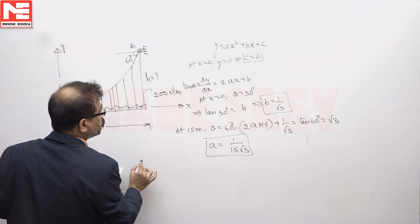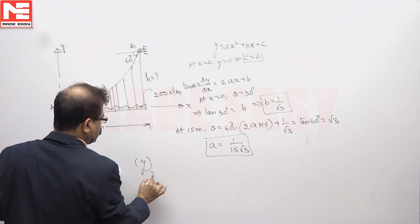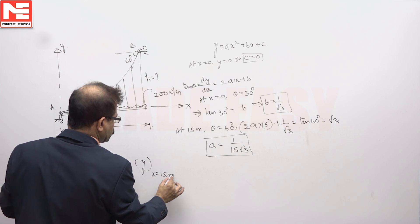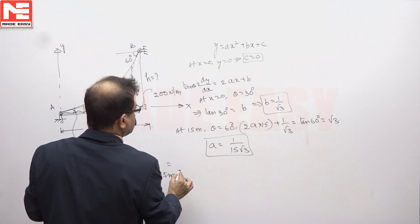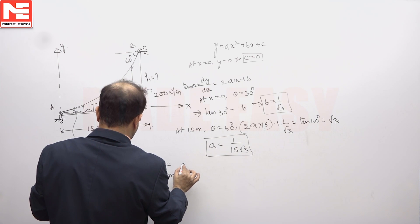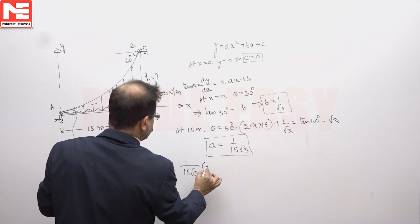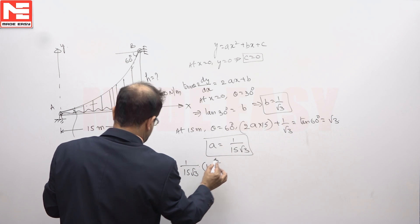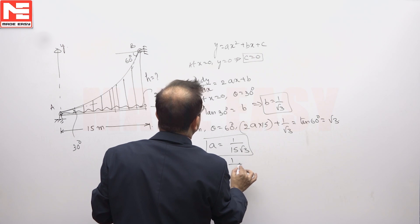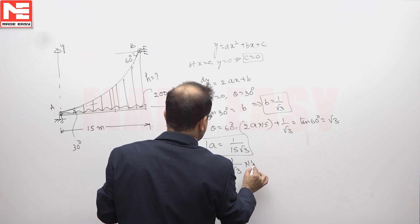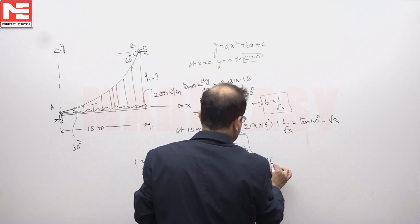So height of point B, if you want y at x is equal to 15 meters. Ax square 1 by 15 root 3 into x square means 15 square plus 1 by root 3 into 15, you will get 10 root 3.